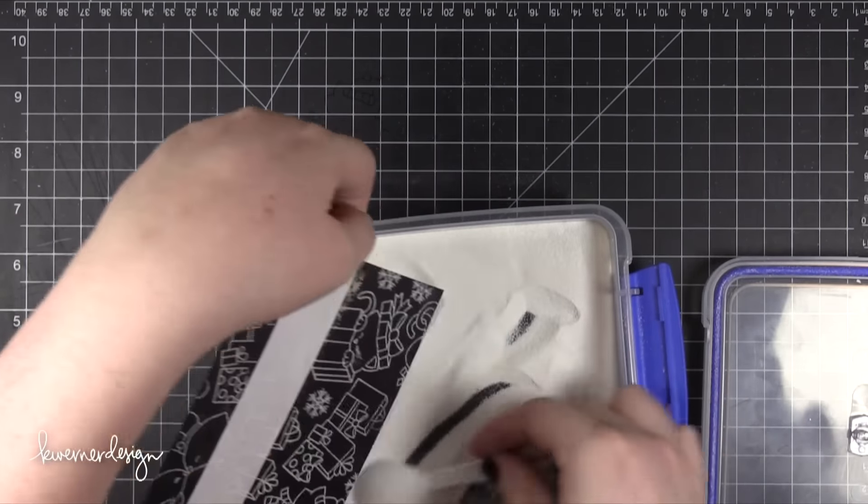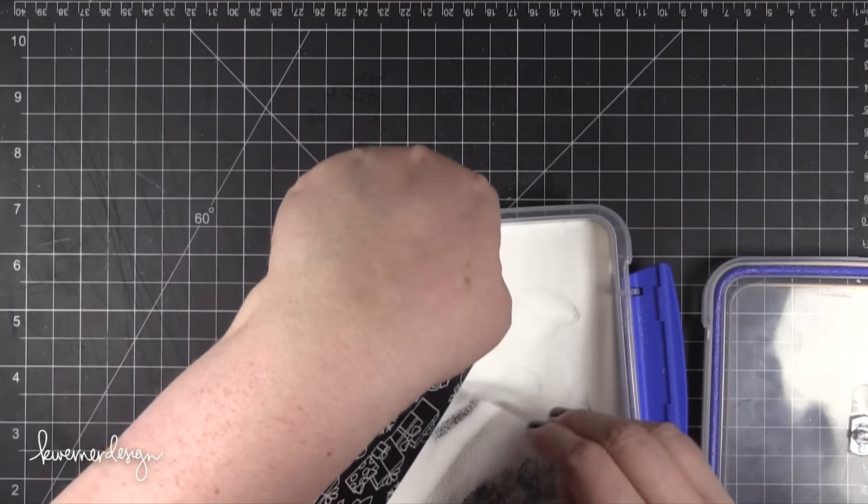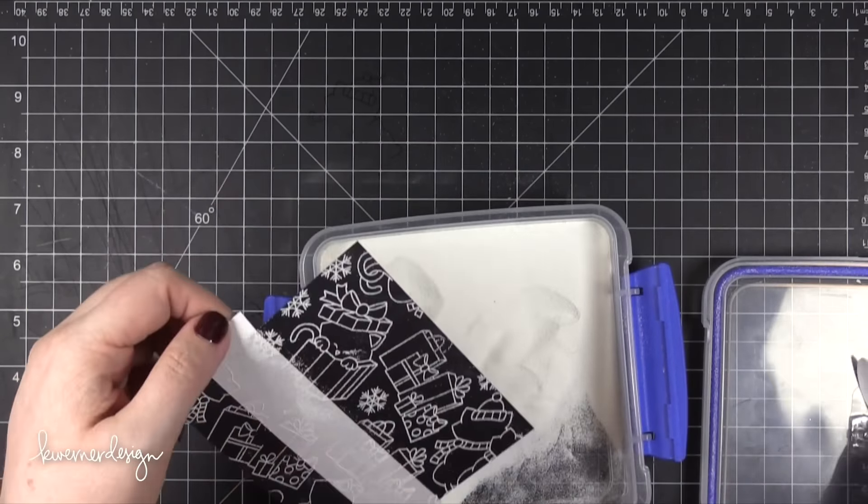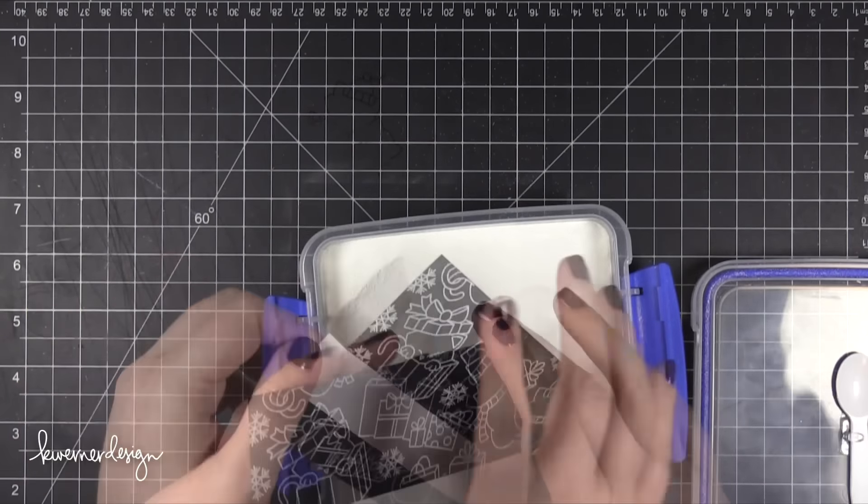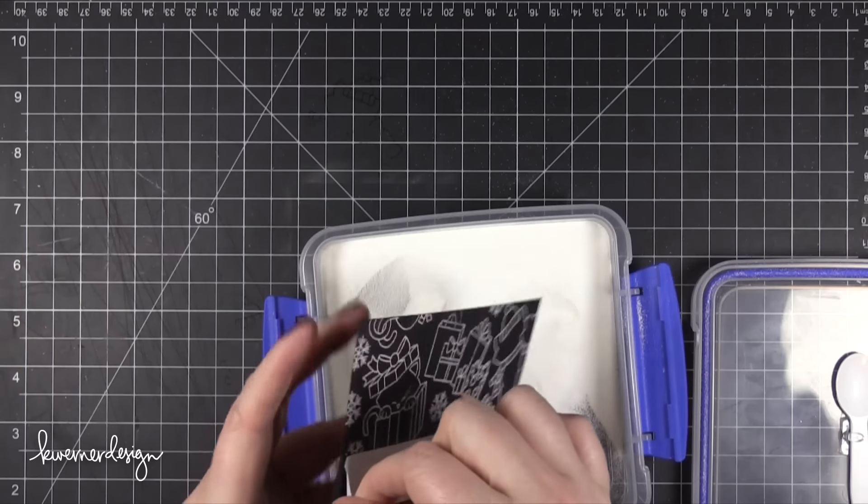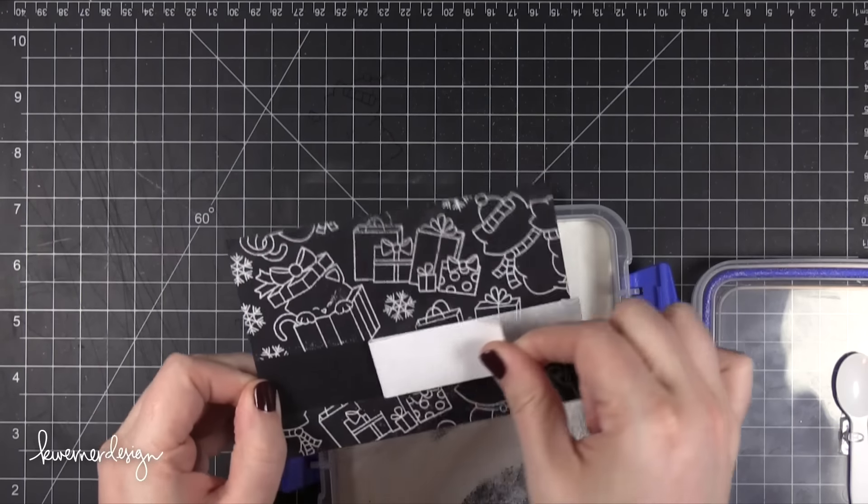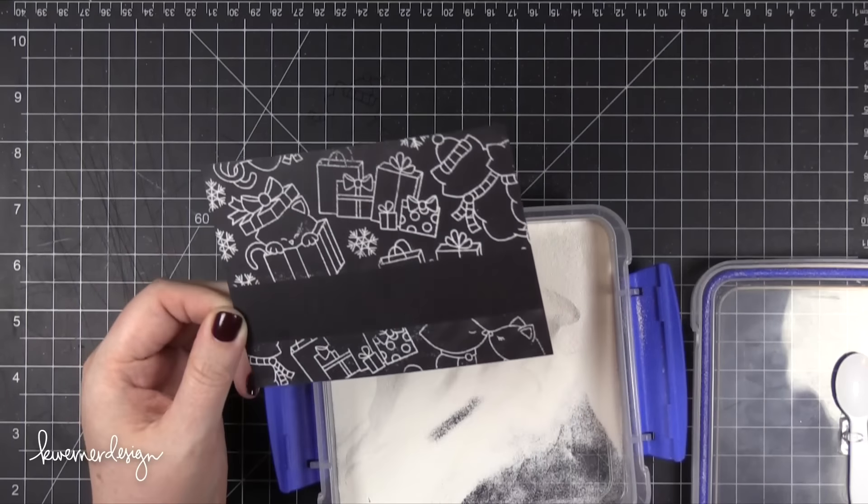I kept the post-it tape on until this point when all of the embossing powder was applied. Then I peeled off that post-it tape and revealed the area underneath. I just didn't want to heat this while the post-it tape was still on the card stock.